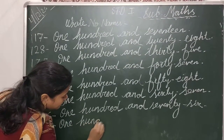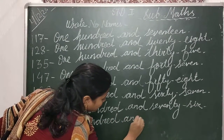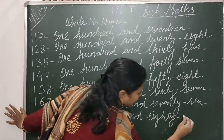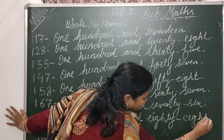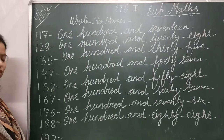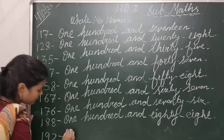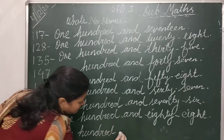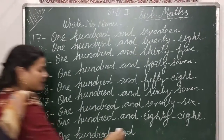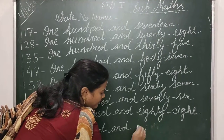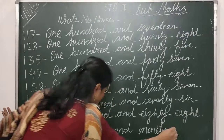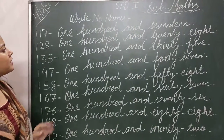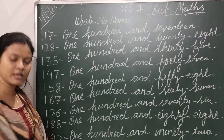Okay children, then the next number is 188. O-N-E, one hundred, H-U-N-D-R-E-D, and eighty-eight. E-I-G-H-T-Y, eighty. E-I-G-H-T, eight. Then the last number is 192. O-N-E, one hundred, H-U-N-D-R-E-D, and ninety-two. N-I-N-E-T-Y, ninety. T-W-O, two. So children, all of you write the number names in your copy neatly and correctly. Today's class is over.